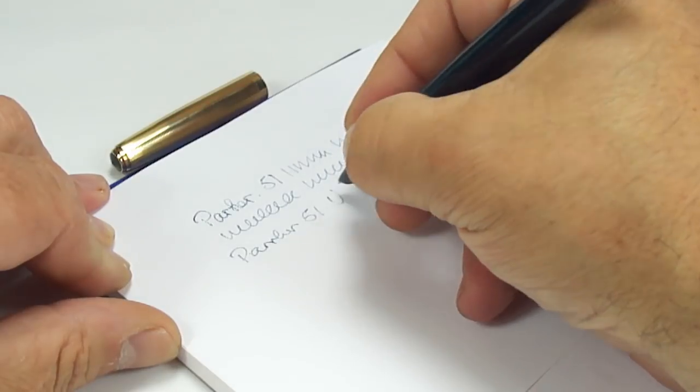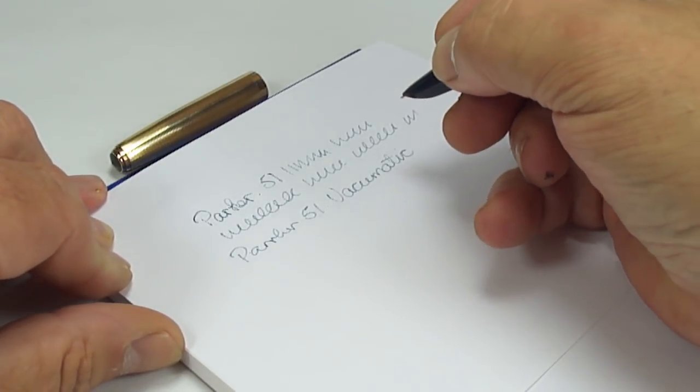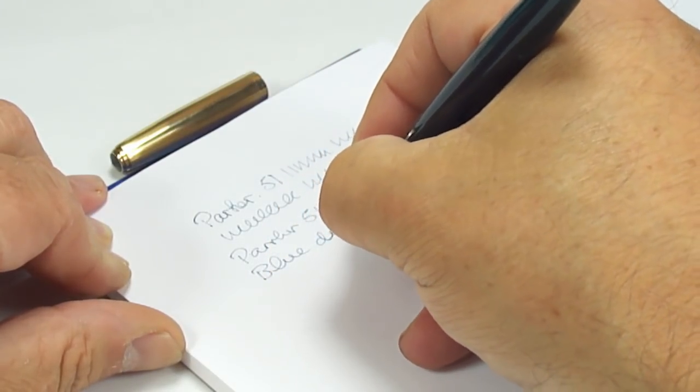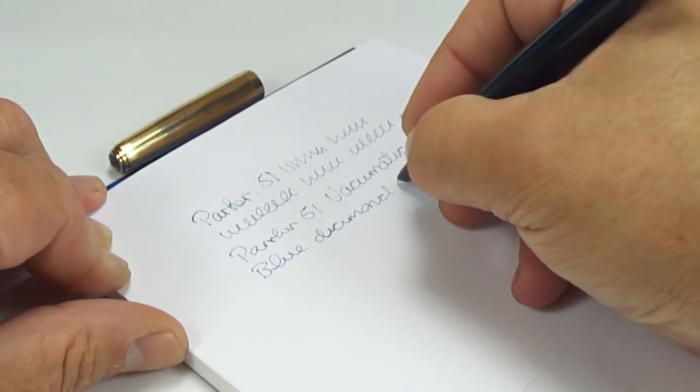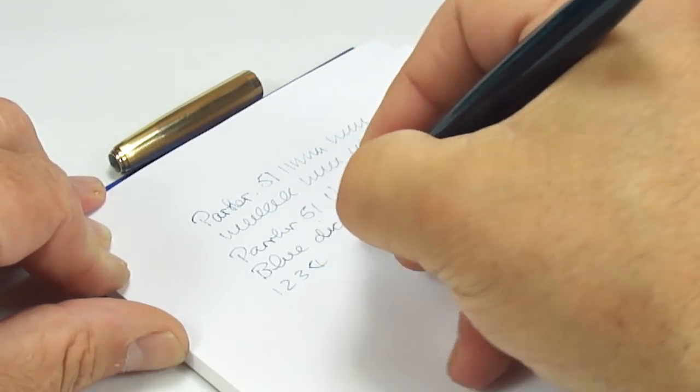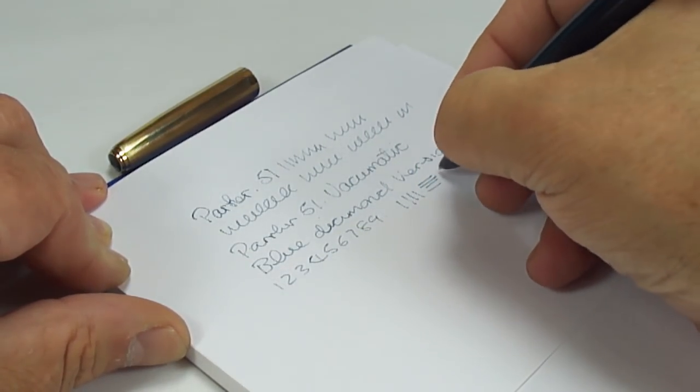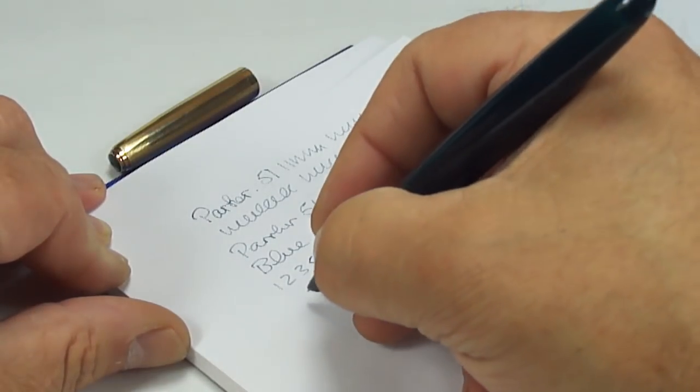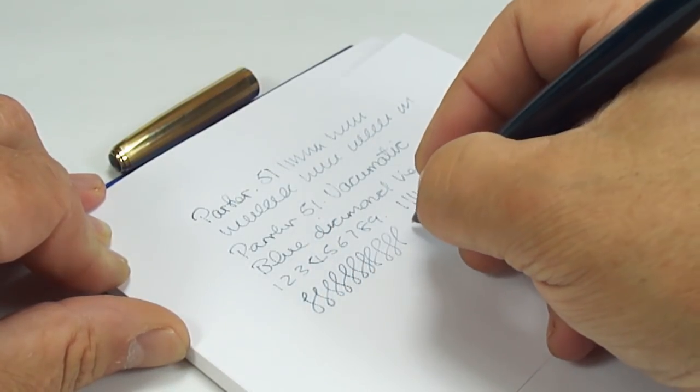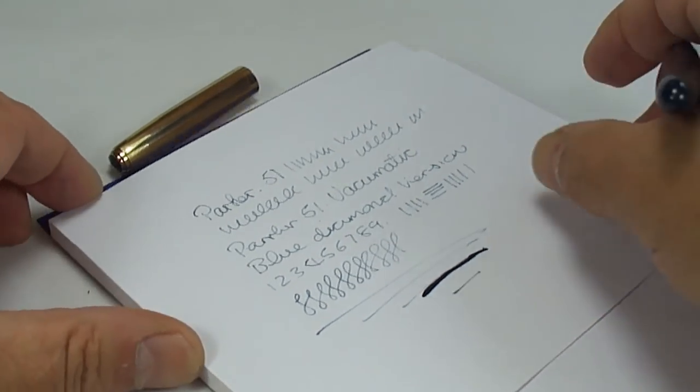There we go. It's coming through already. So we've got a Parker 51. It's a Vacumatic. It's also what we term as the blue diamond version. Obviously, with this pen, as we'd expect, there's no flexibility in the nib. As with a lot of Parker 51s, it's a hard nib. Oh, got a little blob there. So there's a writing sample.